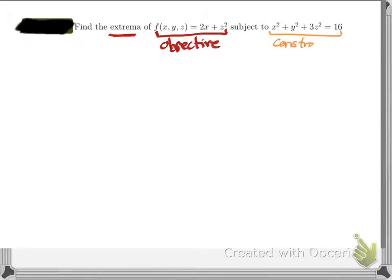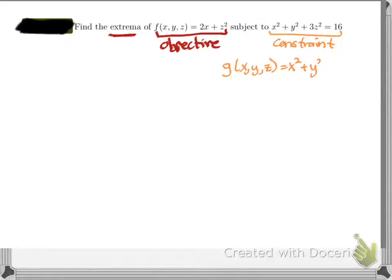For our constraint, to be technically correct, we want it in the form g(x, y) = 0. In this case it's g(x, y, z) = 0, so I can write that as x² + y² + 3z² − 16 = 0. Alright, then we can go through and do our Lagrange multipliers.